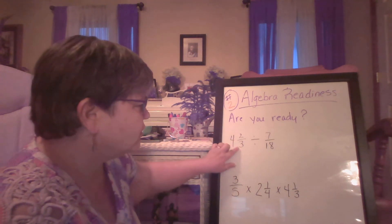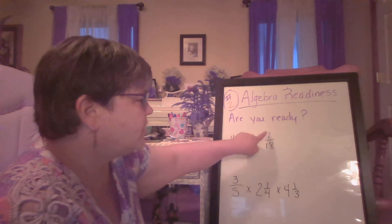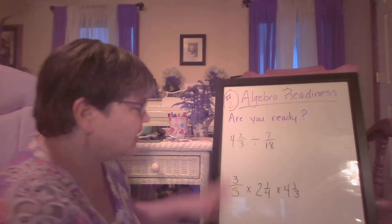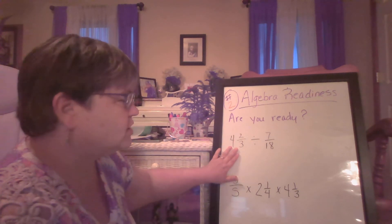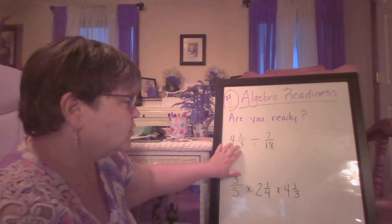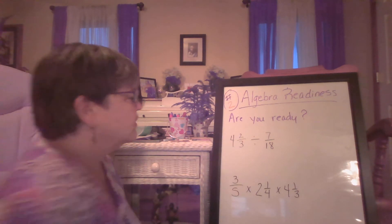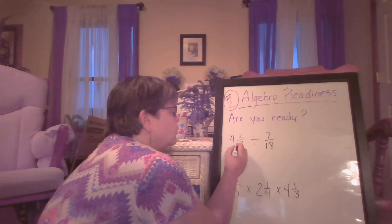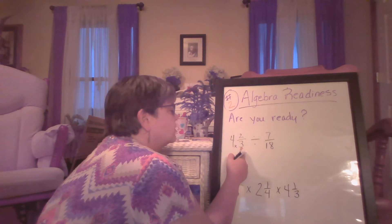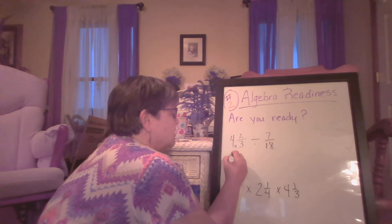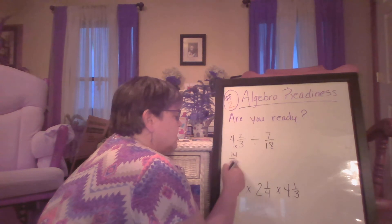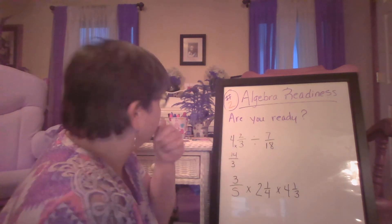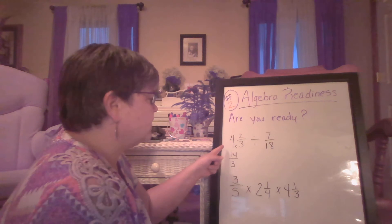Today we're going to work on this problem: four and two-thirds, which is a mixed number, divided by a fraction which is 7/18. The first thing I'm going to do is change this mixed number to an improper fraction. So watch — I multiply: four times three is 12, plus two is 14. The denominator stays the same.